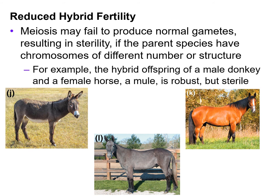Reduced hybrid fertility: meiosis may fail to produce normal gametes, resulting in sterility, if the parent species have chromosomes of different number or structure. For example, the hybrid offspring of a male donkey and a female horse make a robust mule, but that mule goes through meiosis and does not produce normal gametes. Therefore, the mule is sterile.